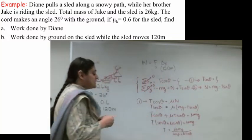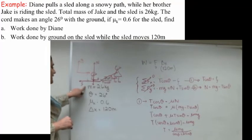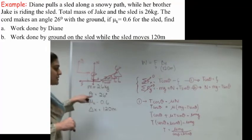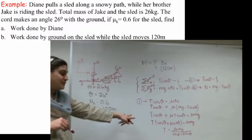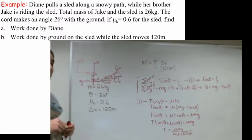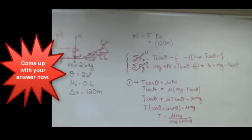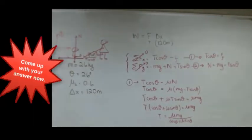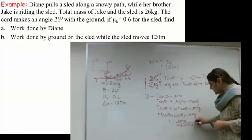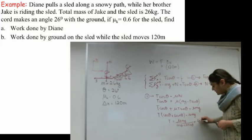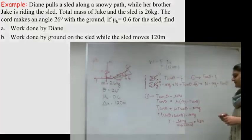Now, by definition, I have the value of mu. I have the value of m. I know what g is. I know what theta is. All I need to do is plug in the numbers and come up with an answer. So go ahead, plug the numbers in, and come up with an answer. I calculate the value of T to be about 42 newtons.